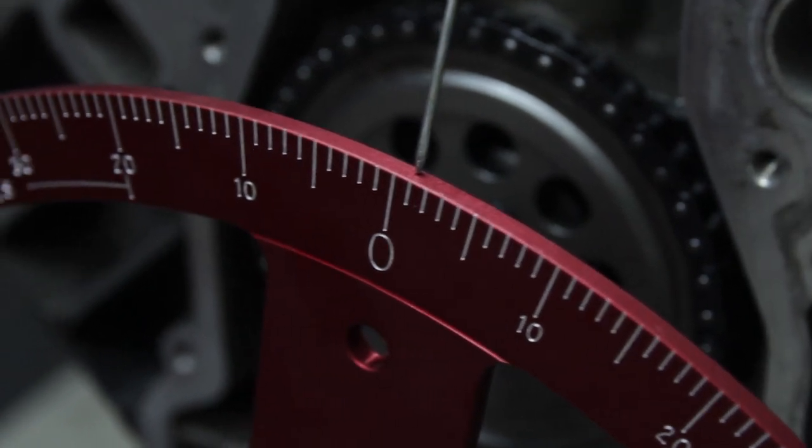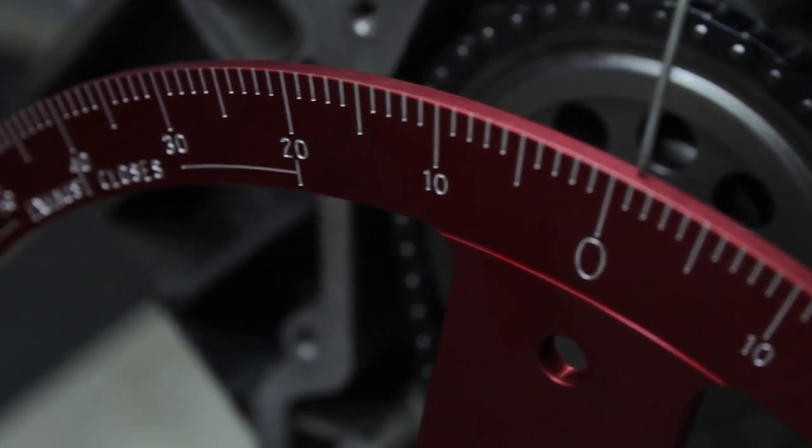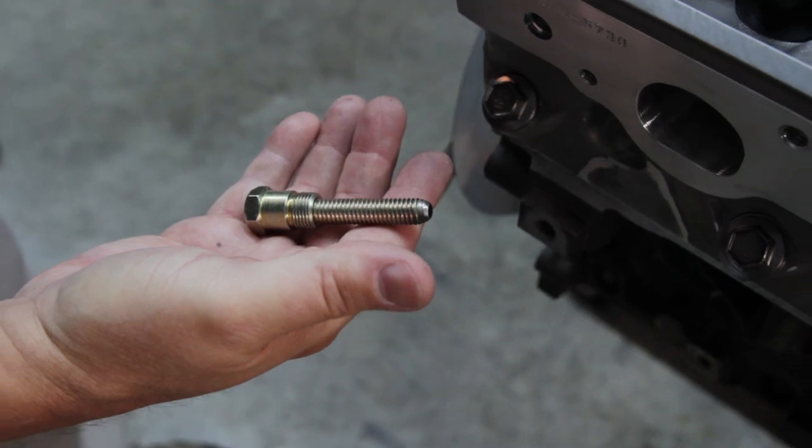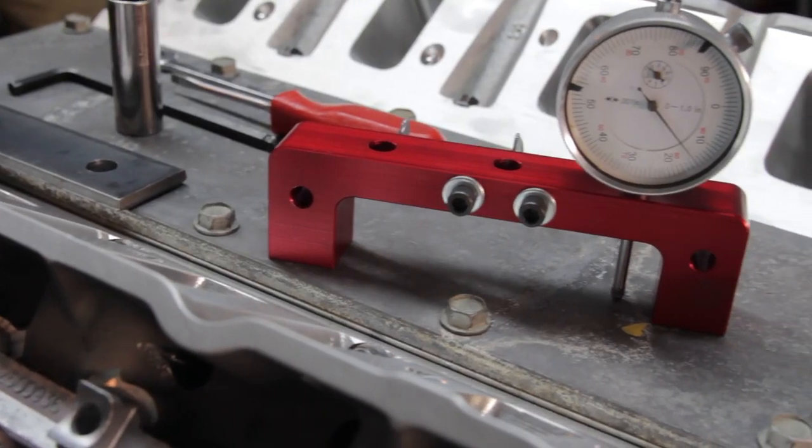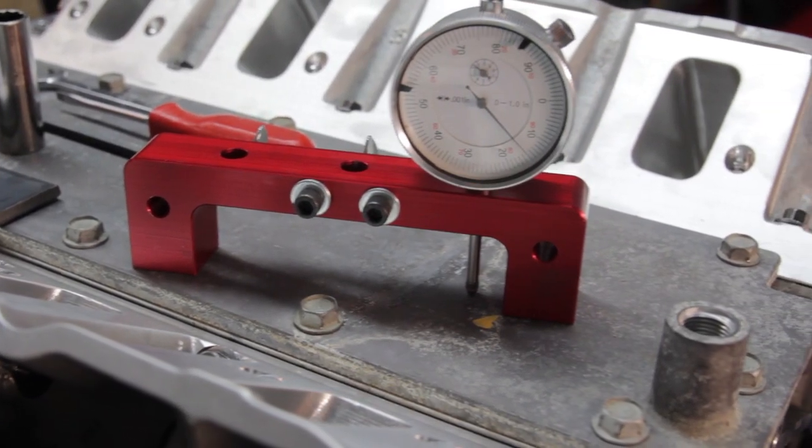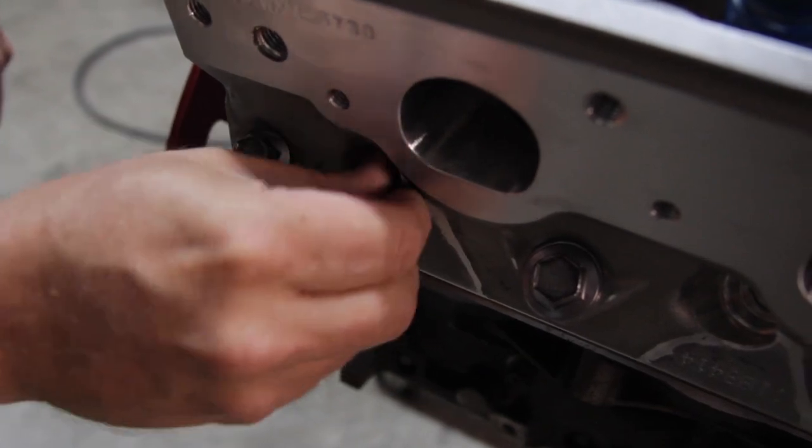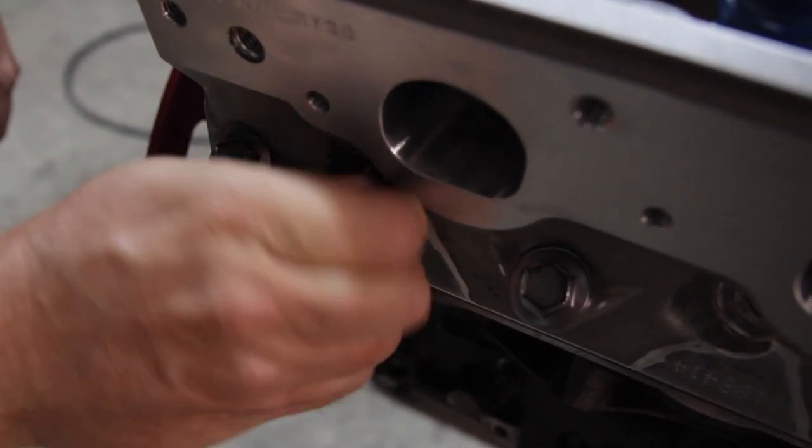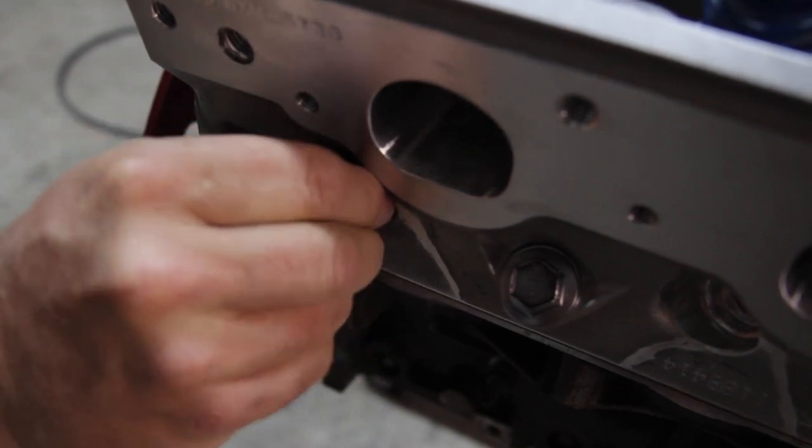When degreeing a camshaft, the first step is to find true top dead center. You can either use a piston stop or you can use a dial indicator. A true piston stop is a more accurate method because it takes any of the bearing clearance and any slack out of the system.